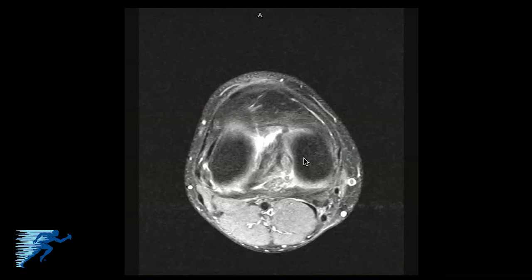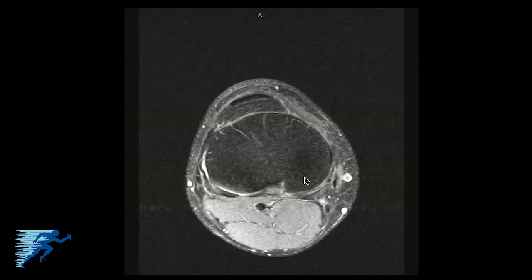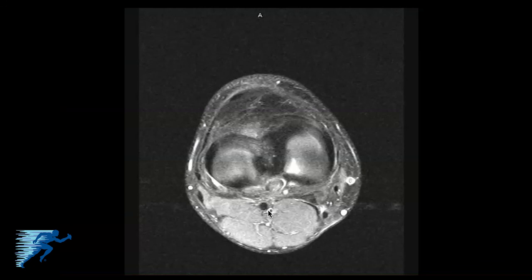The PCL injury isn't as clearly seen on axial as on sagittal and coronal, but we can see the swelling. Here's the PCL attachment site on the tibia, well outlined, with swelling within the substance. We can also identify the artery and vein, which lie directly posterior to the PCL attachment site on the tibia.